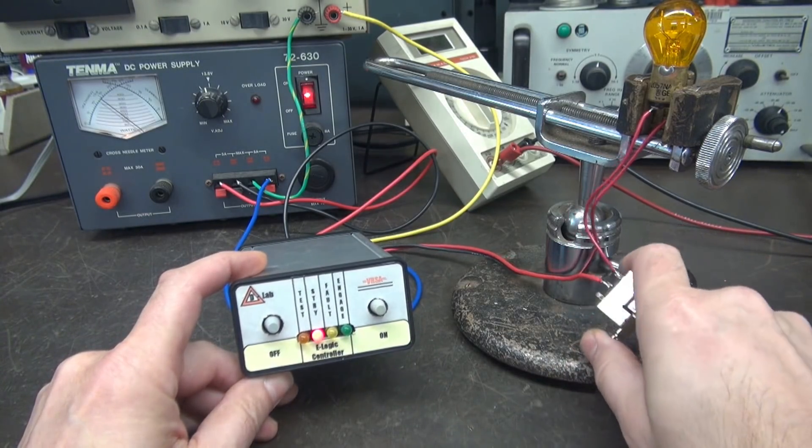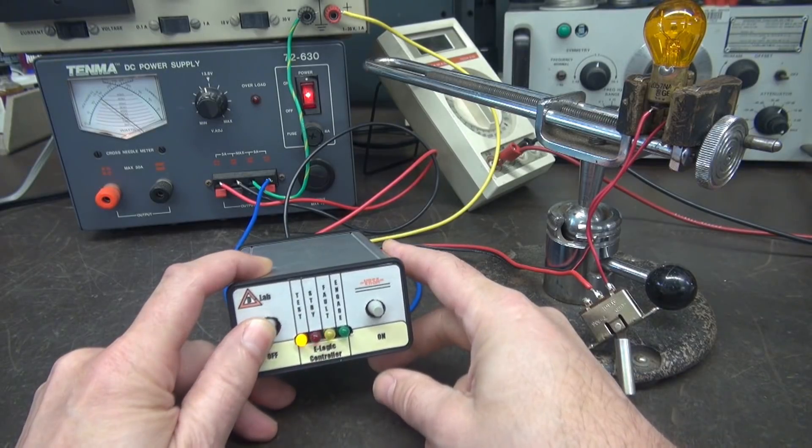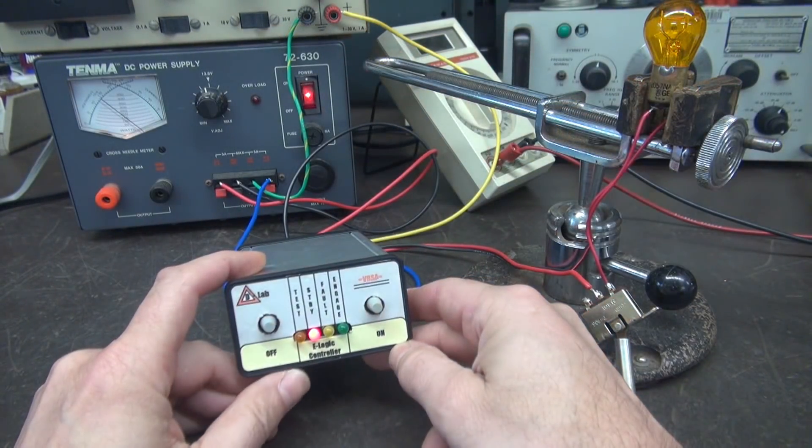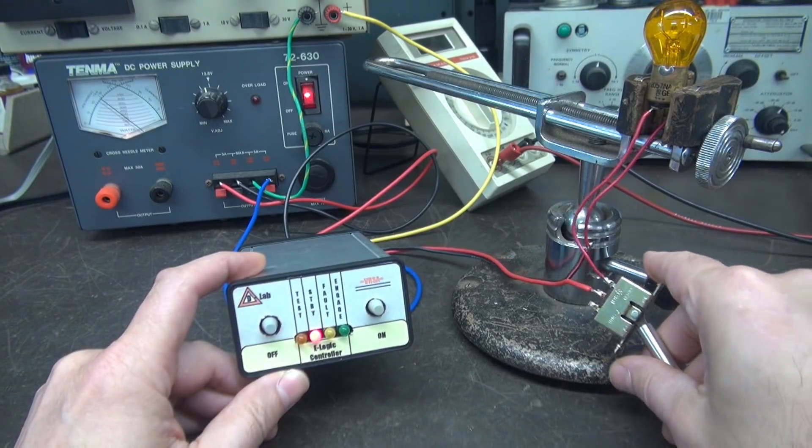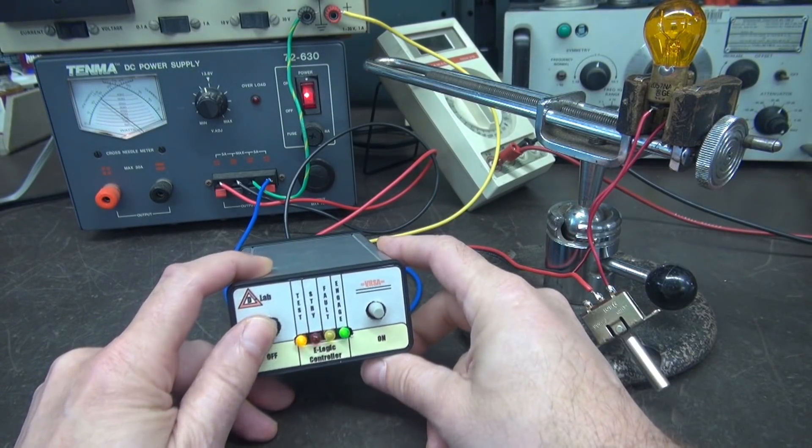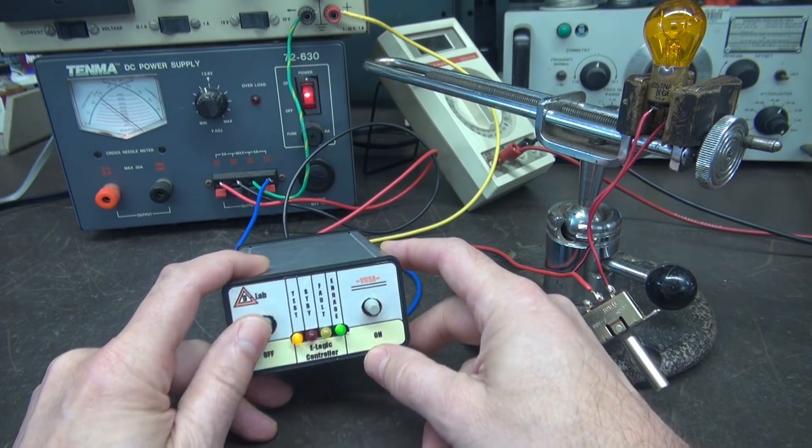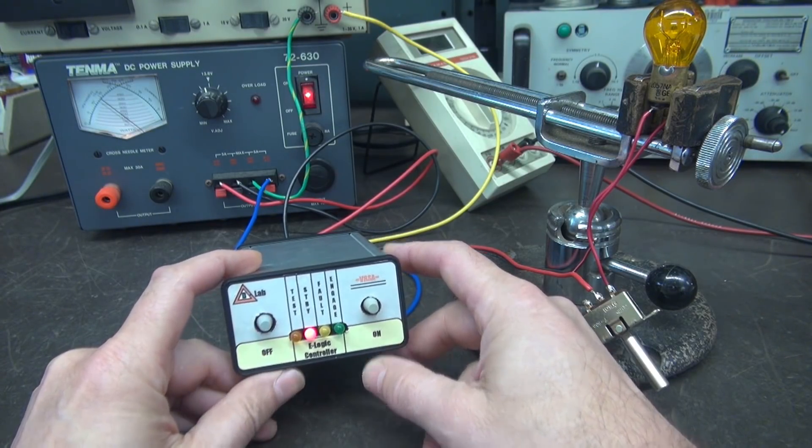Let's turn it back on. Now the fault's cleared, and I can turn on and off the device. Now, if the load opens, obviously you have a fault, and I can't turn it on and off. So you have an indication that something is wrong.